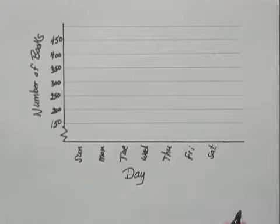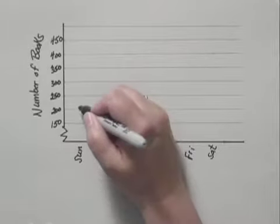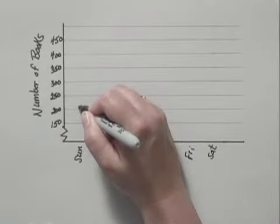Now I make a point on the graph for each value in the table. I start with Sunday - there were 210, so I make a mark at about 210 above Sunday.